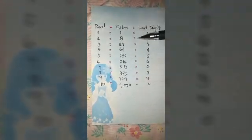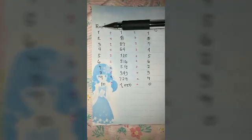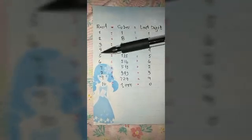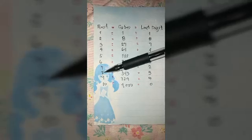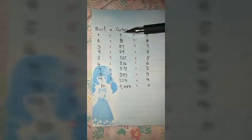So this is the table. This is the root: 1, 2, 3, 4, 5, 6, 7, 8, 9, and 10. And this is the cubes.